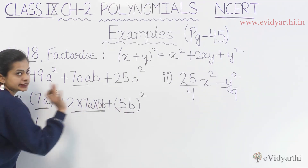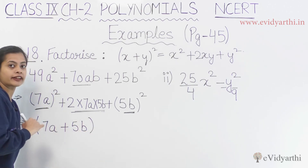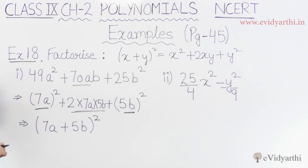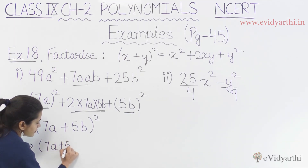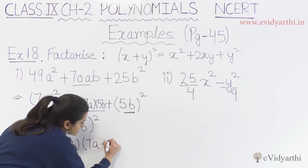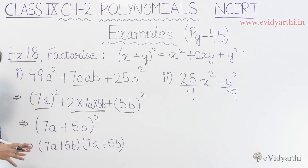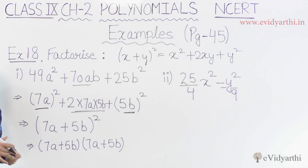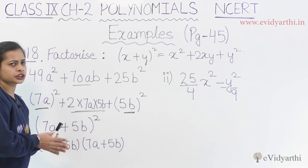Now it shows up clearly: this is first term plus second term, whole square. The first term is confirmed as 7a, and the second term is confirmed as 5b, drawn as a whole square. So you can write the answer as (7a + 5b)². If you want to write the factors explicitly, then 7a plus 5b is one factor, and the next factor is the same, 7a plus 5b. These are the two factors: (7a + 5b)(7a + 5b). Have you understood how I matched the expanded form to the identity?